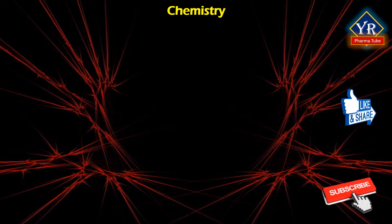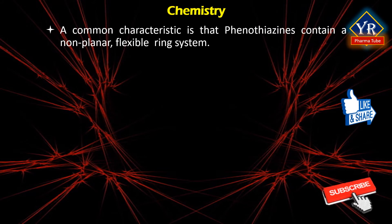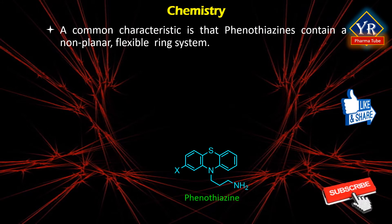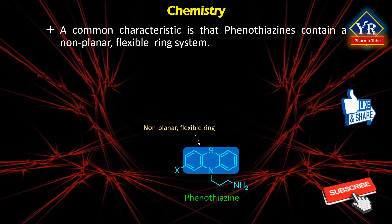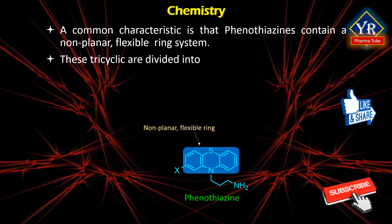Chemistry of phenothiazines. A common characteristic of all phenothiazines or tricyclic antipsychotics is that they contain a non-planar, more or less flexible ring system. The central ring may be six-membered or seven-membered and is linearly fused to two benzene rings. Thus, the tricyclics are divided into two structural classes according to the size of the central ring: 6-6-6 tricyclics and 6-7-6 tricyclics.